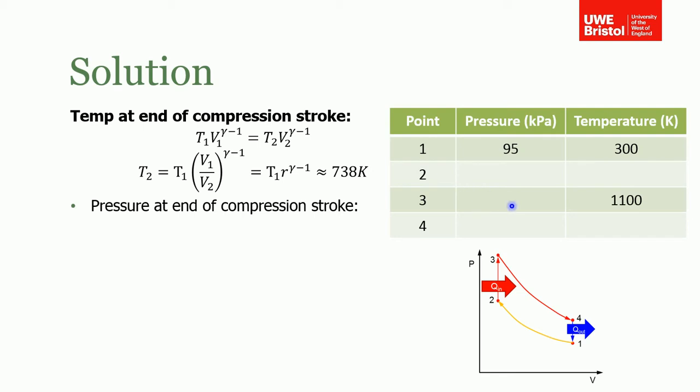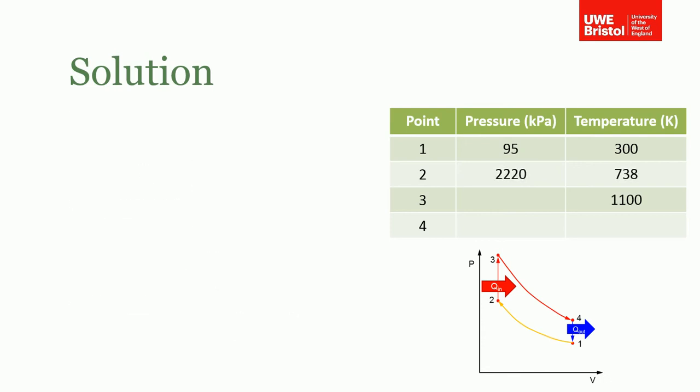Now we're going to work out the pressure at the end of the compression stroke because we need that pressure to help work out the pressure at point three, which is the next part of the question. We know that because we've already worked out the temperature, we can now use this relationship, the ideal gas law. We know that P1 V1 over T1 is a constant, and we now know all the information. Again, we don't know what the volumes are, but we know their ratio, that's the compression ratio. We now know P1 and T2 and T1, and if you work that out, P2 is basically 2.2 megapascals. Or you could do it another way, you could use this relationship working from the volumes. It doesn't matter either way, you'd come up with the same answer.